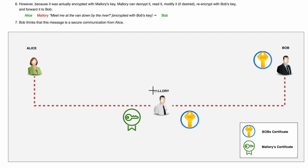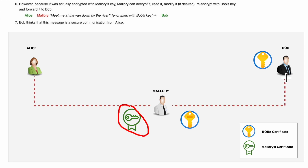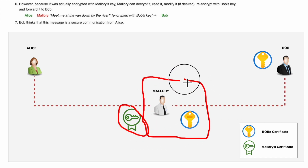Now let's see what happens when there is a man-in-the-middle attack. Here we see that Mallory has come between Alice and Bob. Alice sends a message to Bob asking for his public key. This message is intercepted by Mallory, and instead of forwarding Bob's public key, Mallory sends his own public key to Alice. Alice thinks she is interacting with Bob and is in possession of Bob's key, so she sends the message to Mallory — thinking it is going to Bob — but Mallory is able to decrypt it using his own private key.